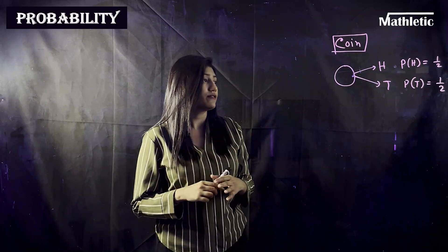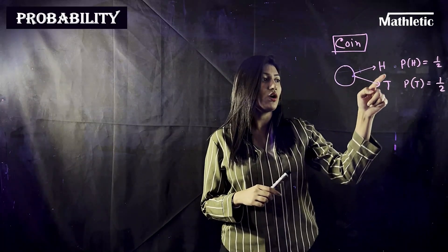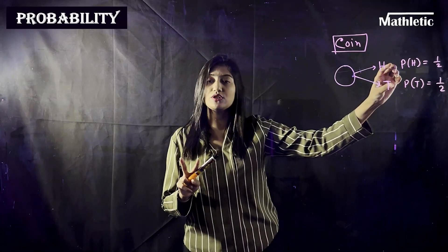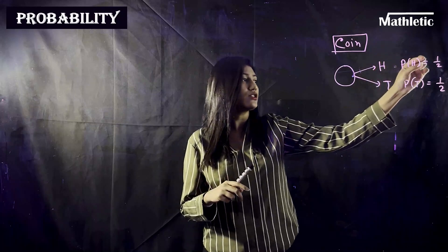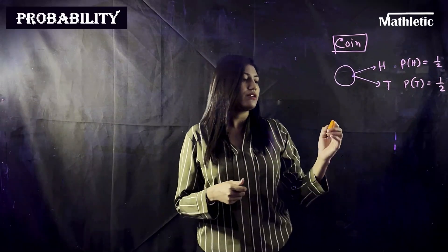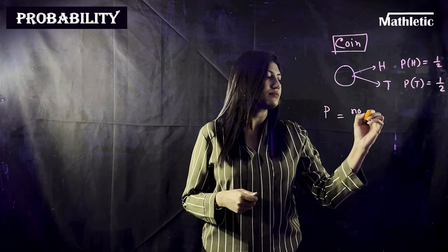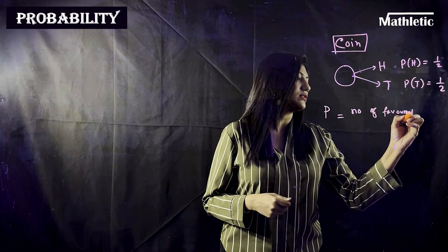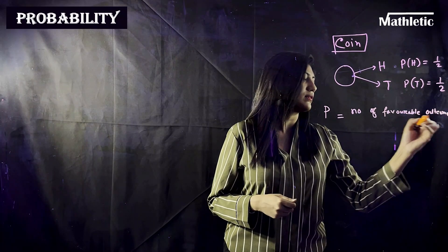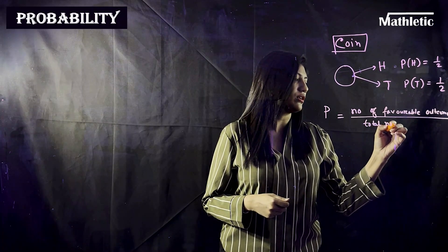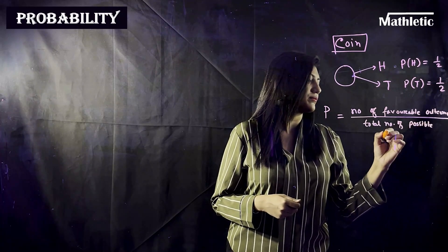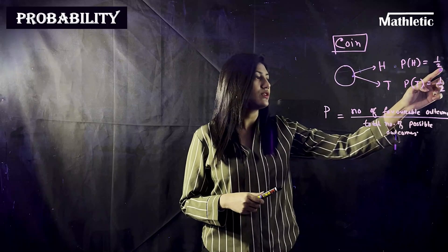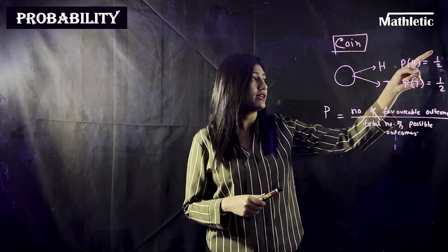The probability of one-half comes from the number of favorable outcomes divided by the total possible options. You have two options — head or tail — and only one side of the coin gives a head, so it's one divided by two. The formula for probability is: number of favorable outcomes divided by total number of possible outcomes.